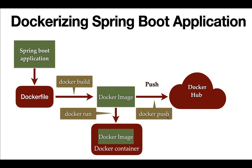Once we have a Docker image on our local machine, we can push it to Docker Hub using the docker push command. If we make the Docker image public on Docker Hub, then anyone can pull that image from Docker Hub and run it in a Docker container.